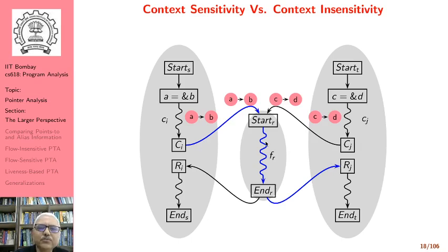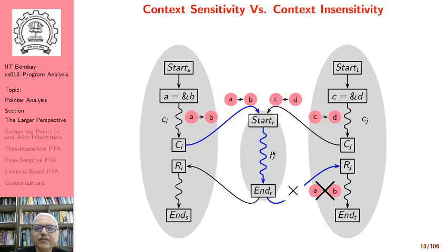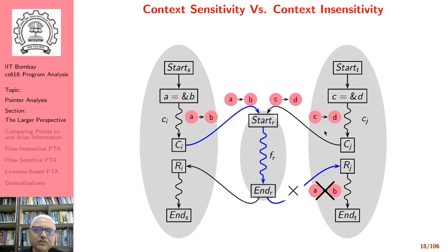If we were to follow the invalid path, we might end up propagating 'A points to B' into T, which is spurious. We should not propagate 'A points to B' along that path. That is the disadvantage of representing procedure calls using a graph statically — the graph does not tell us whether we came from S or from T unless we do something special. And that special thing is context sensitivity.